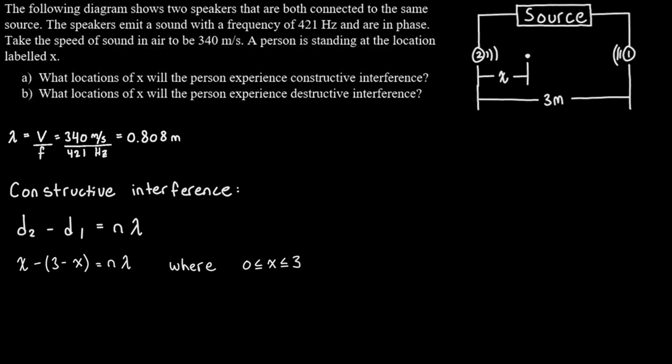Solving for x, we get 2x minus 3 equals n times lambda, and then x equals (3 plus n times lambda) divided by 2. If we plug in n equals 0 we get (3 plus 0) over 2, which gives us 1.5 meters — that's exactly in between the two speakers. We need to plug in positive and negative values of n to get all values of x between 0 and 3, continuing in the negative direction until we go below 0 and the positive direction until we go above 3.